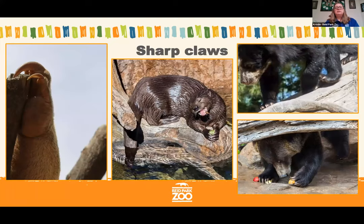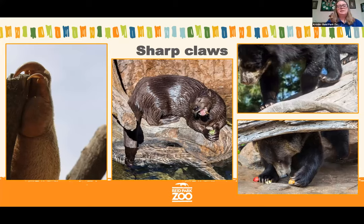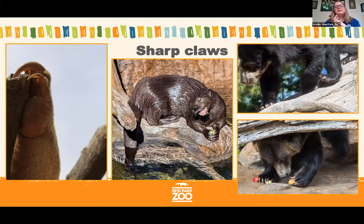Sharp claws are also really helpful for climbing. The picture on the left shows a tamandua arm — the tamandua is a type of lesser anteater that spends most of its time in trees, using those claws to pull itself up. Claws can also help hold onto food. Even though the otter has webbed feet for swimming, they end in sharp claws that help her grab onto food. An Andean bear is shown climbing down a tree, claws digging in, while a grizzly bear uses his claws to hold fruit.